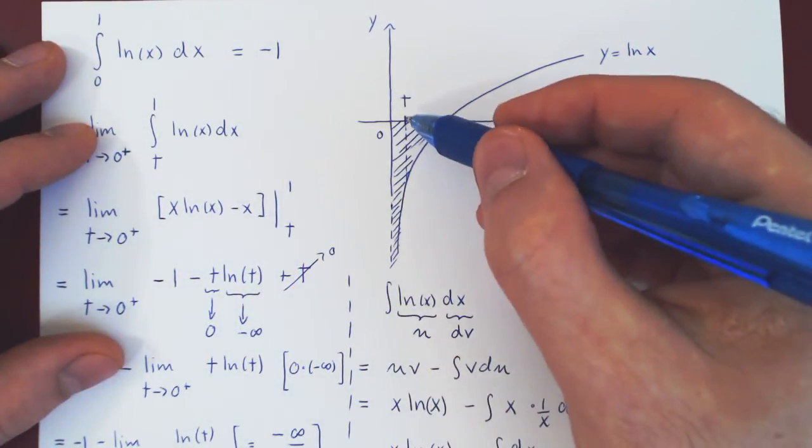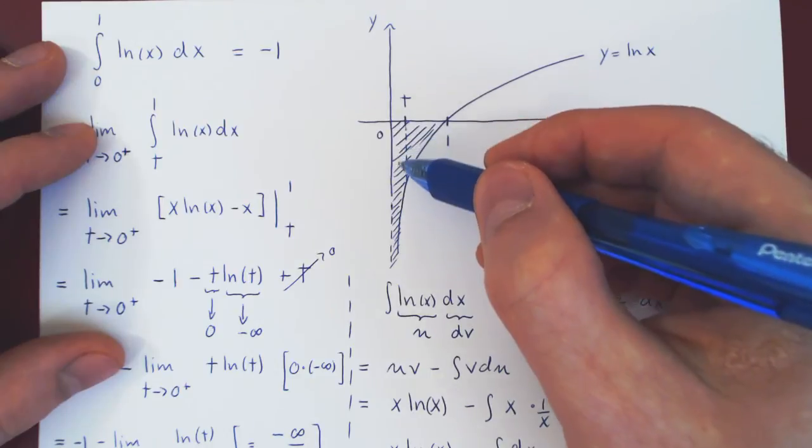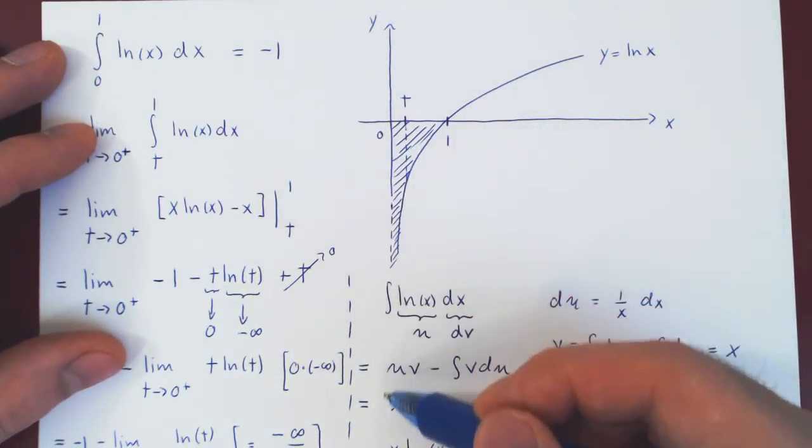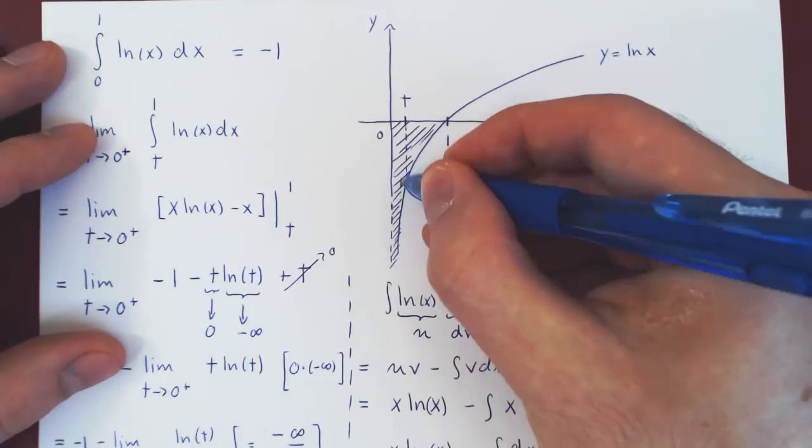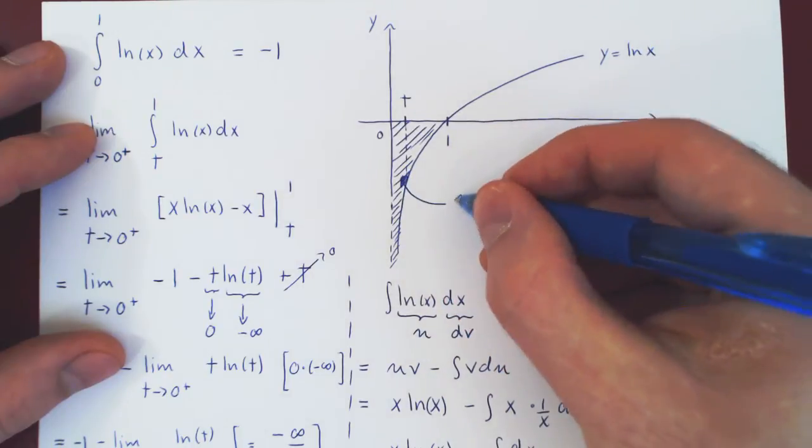Well, so now we have this region that is, again, infinitely long, as we have a vertical asymptote, and the area of this region happens to be exactly 1.